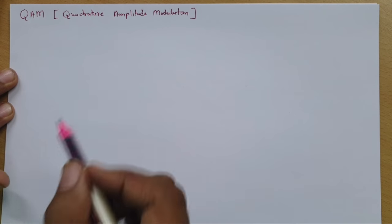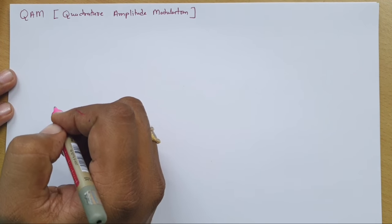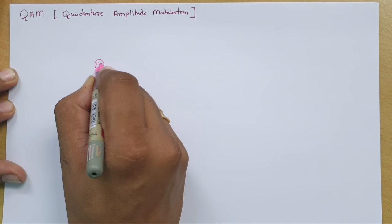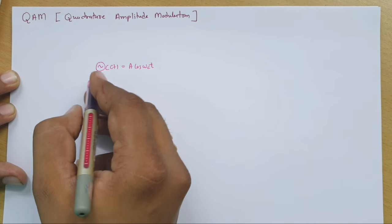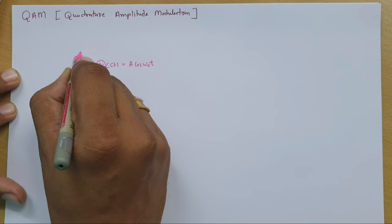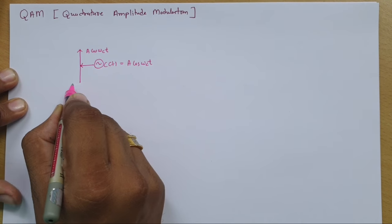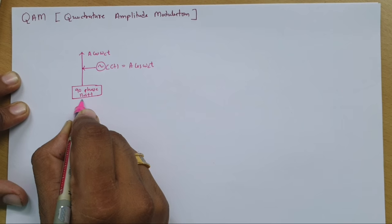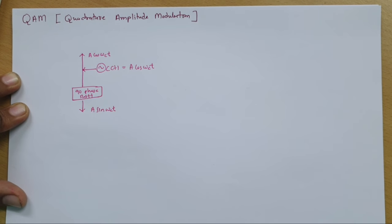In Quadrature Amplitude Modulation, the name comes from having two carrier signals in quadrature phase. We have a carrier signal C(t) = A·cos(ωct). To translate this into quadrature phase, we apply a 90-degree phase shift, giving us A·sin(ωct) as the second carrier.